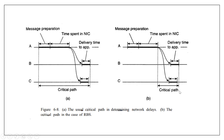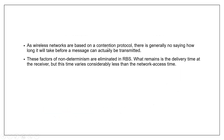This difference is seen when we use the RBS protocol. Wireless networks are based on a contention protocol, so there is generally no saying how long it will take before a message can be transmitted. These factors of non-determination are eliminated in RBS. What remains is the delivery time at the receiver, but this time varies considerably less than the network access time.